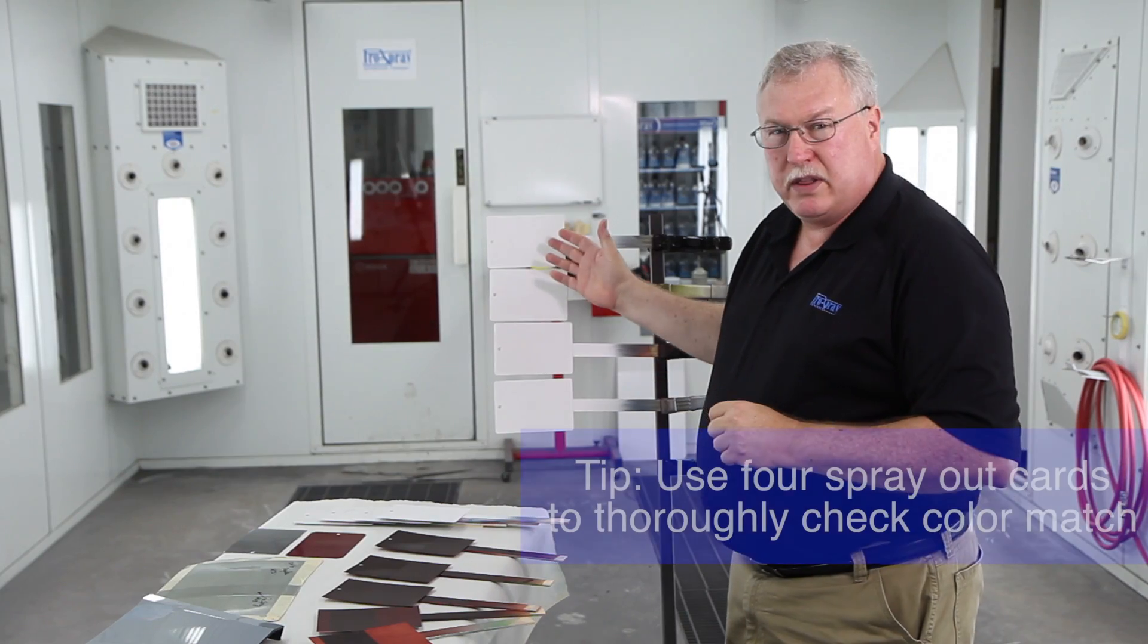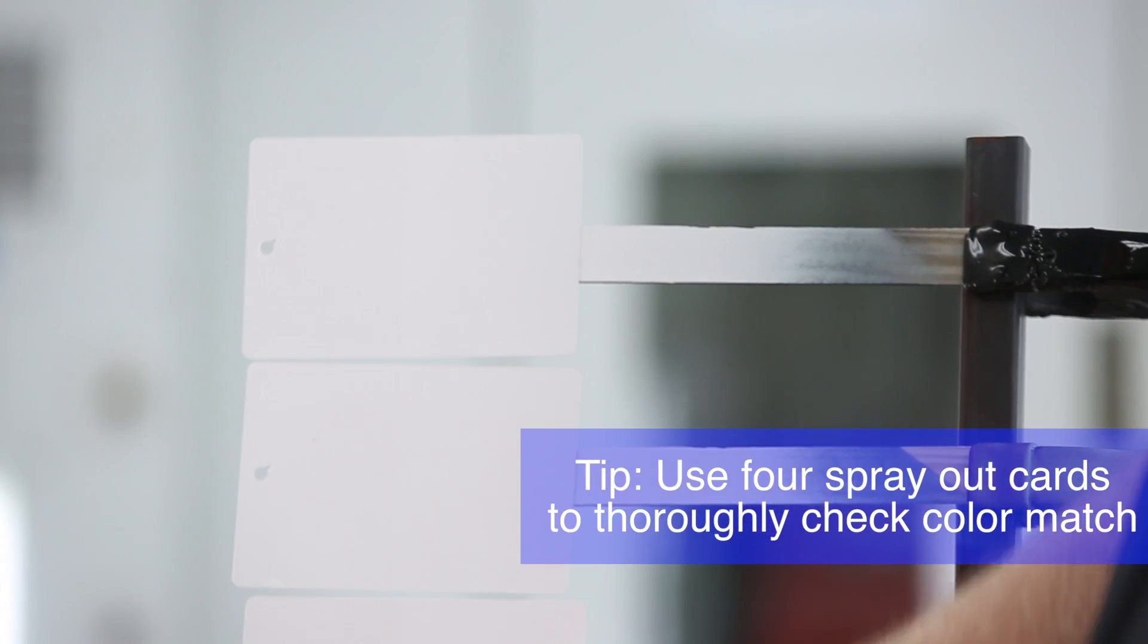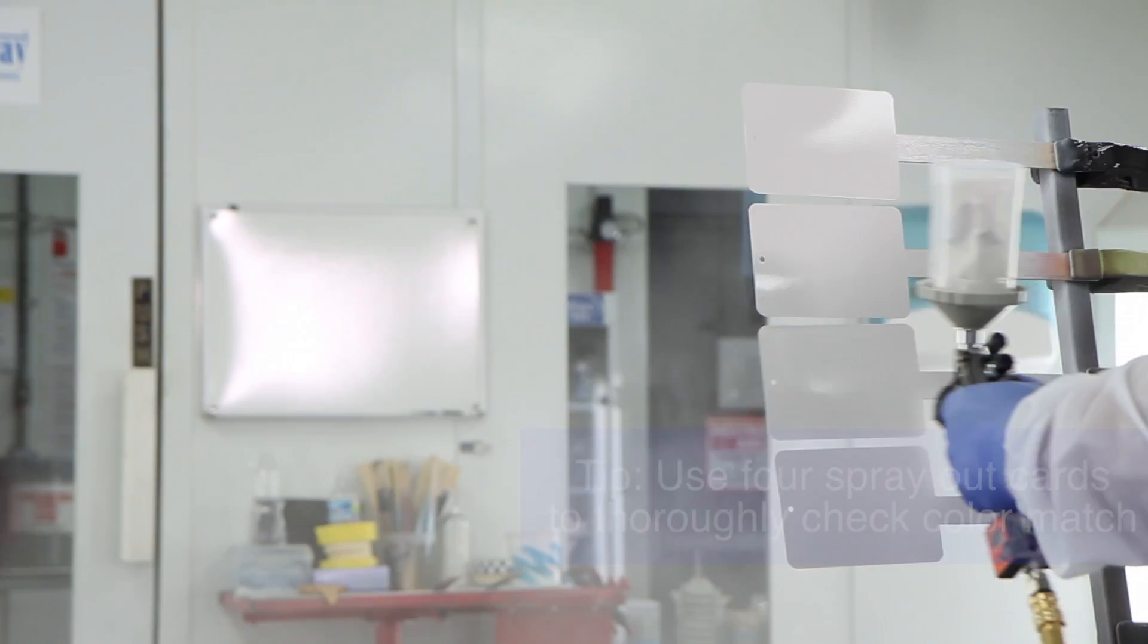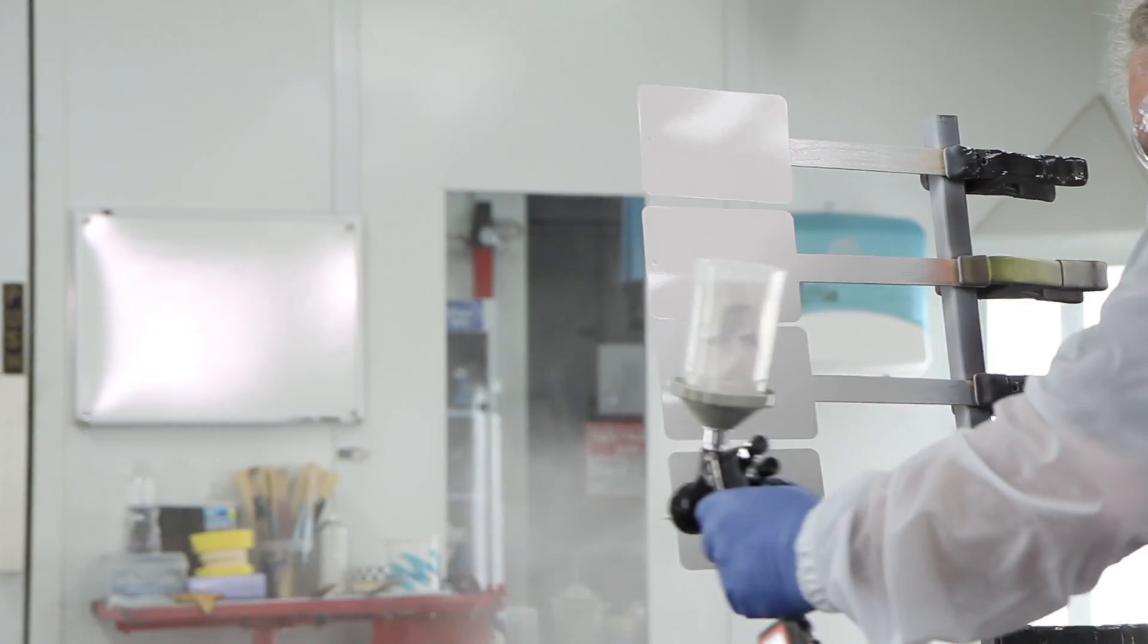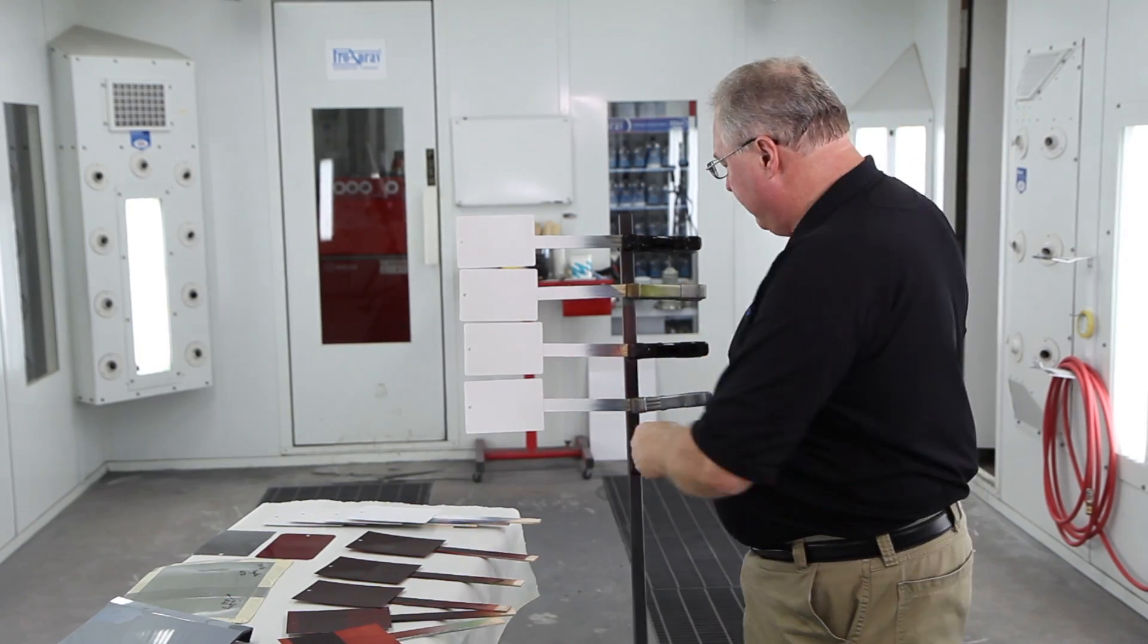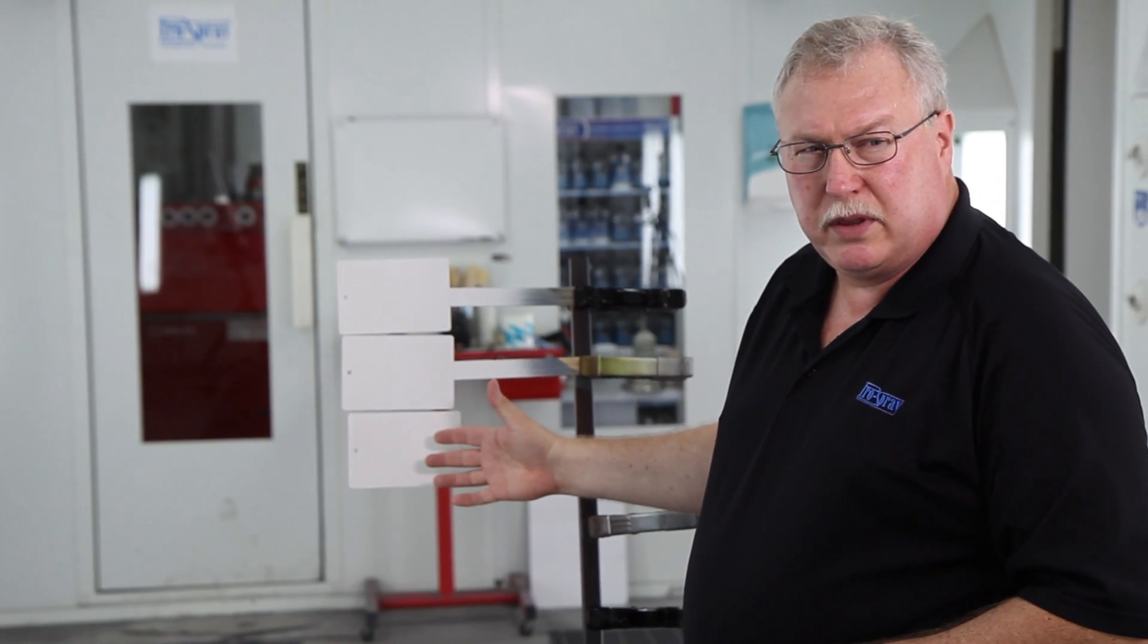In this particular case, when you're doing a three-stage, set up four separate spray-out cards. You spray all four cards with your ground coat. Once the ground coat has been applied, you can take one panel away. Now you're left with three panels with a ground coat on.